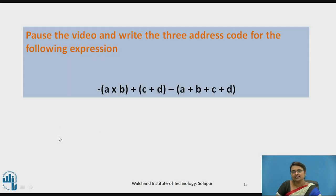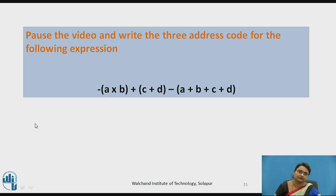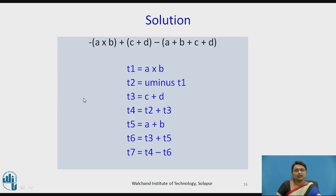Pause the video and write the three-address code for the following expression — a simple arithmetic expression. Write the three-address code statements by yourself. The solution uses a total of seven temporary variables for that particular statement.